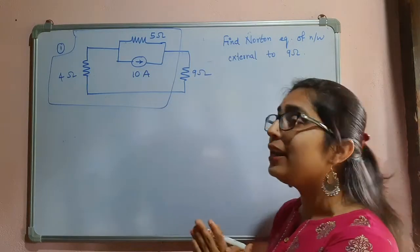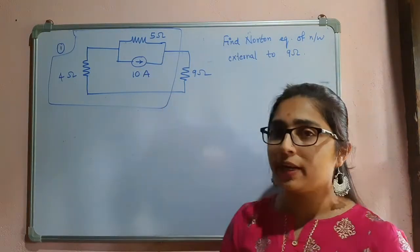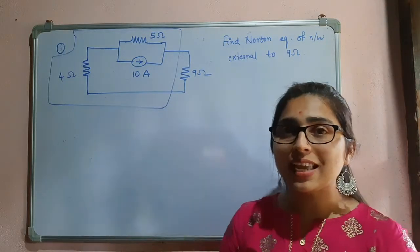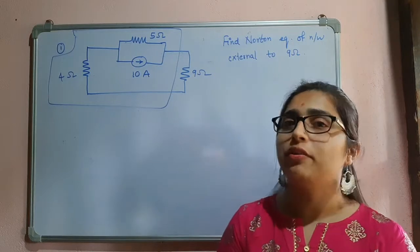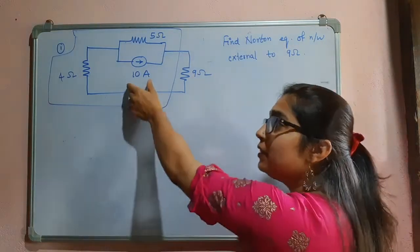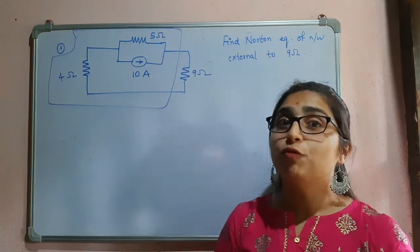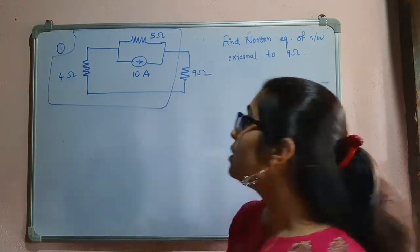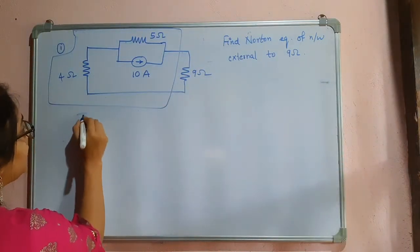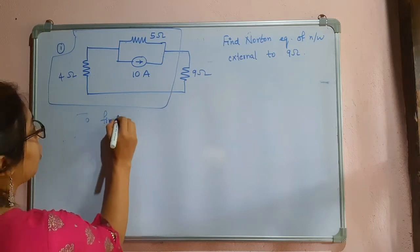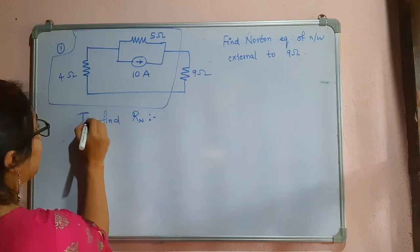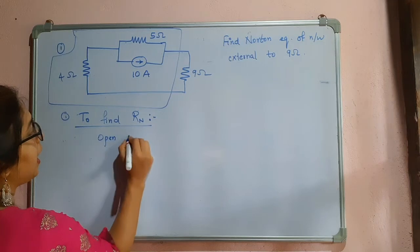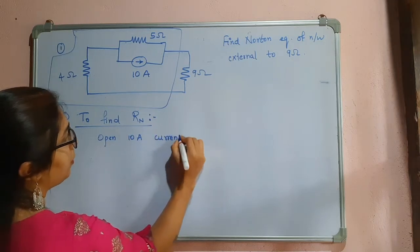In this case we have only one independent source, which is a 10 ampere current source. So to find the Norton's equivalent resistance, you have to open this current source. If there was a voltage source you would have shorted it, but here we have a current source so we will open it. I will redraw this circuit to find Rn. This is the first step: open the 10 ampere current source.